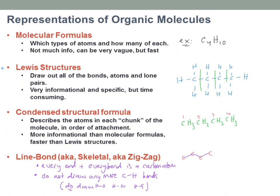Looking at carbon one, I see one line drawn — one bond — that's to carbon two. So to get up to four bonds, I need three hydrogens on there. Sure enough, three hydrogens on carbon one. Carbon two has two bonds drawn from it — attached to carbon one and carbon three — so it needs two more, meaning two hydrogens. Same for carbon three, and carbon four has three hydrogens again because carbons always have four bonds unless they have a charge.